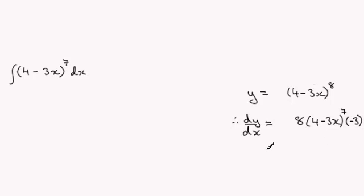And what I get is -24(4 - 3x)^7. And so can you see that this looks exactly the same as this except for the constant -24.